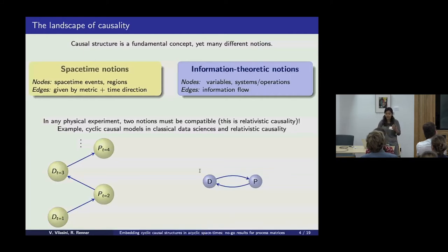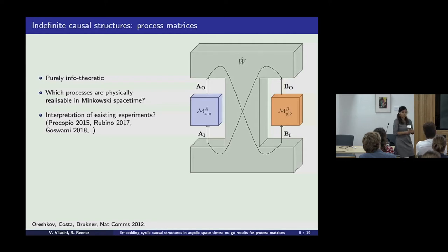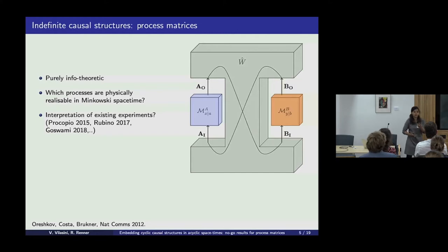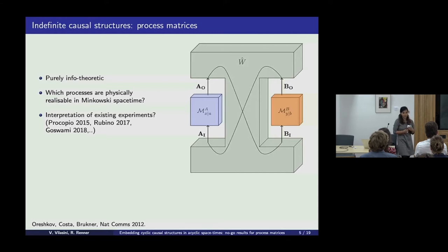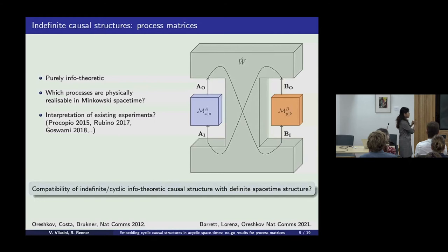That's the sort of clarification we would try to bring to questions related to indefinite causal structures. The kind of information-theoretic causal structures we consider here are indefinite causal structures, which we've heard about in the past few days. The interesting open question is to ask which of these process matrices are physically realizable in a background spacetime, and how we interpret these physical realizations. This is ultimately a question of compatibility of an indefinite or cyclic information-theoretic causal structure with an acyclic spacetime causal structure — and what does this even mean? At face value it sounds a little paradoxical: how can an indefinite notion be compatible with a definite notion of causality?